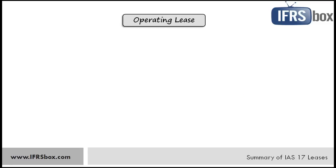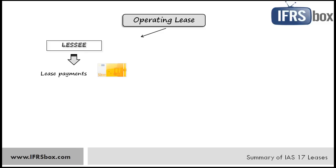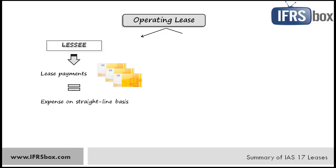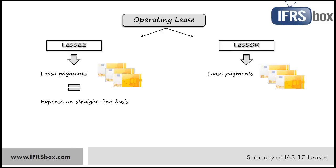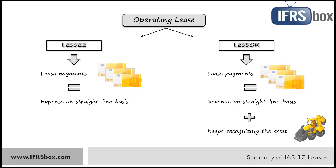Now let's take a look at the operating lease, which is much easier. The lessee does not recognize any asset. Instead, the lessee recognizes lease payments as an expense in profit or loss on a straight-line basis, or some other pattern that would be more relevant. On the lessor side, lease payments received from the lessee are recognized as revenue in profit or loss, basically on a straight-line basis. The lessor keeps the asset in his own financial statements and depreciates it.